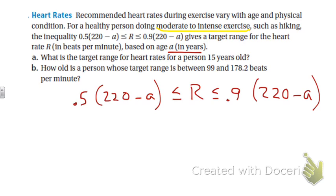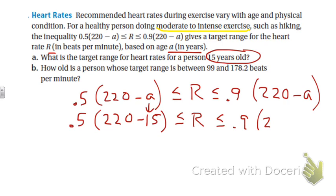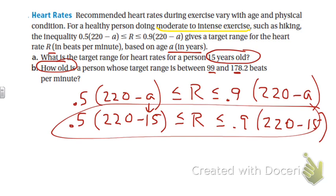So a is the age, r is the beats per minute. What is the target range for heart rate for a person that is 15 years old? That is age, so all you have to do is plug in 15 for age, and it's basically already solved for you once you plug in 15, because again there's not just one answer to this question because it's different for every age, and you just simplify. How old is a person whose target range is between 99 and 178? Now this one's a little trickier.